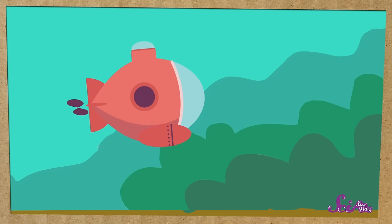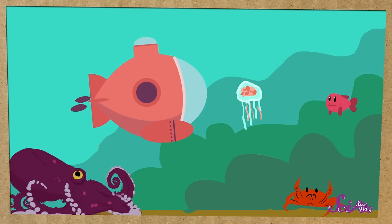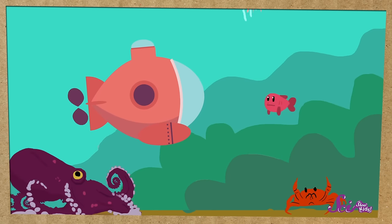In real life, we use submarines for all kinds of things, including learning more about the oceans. When scientists send submarines under the water, they find so many cool animals. There are jellyfish, octopuses, crabs, fish, and tons of animals we've never even seen before.